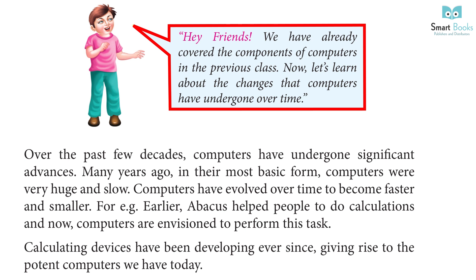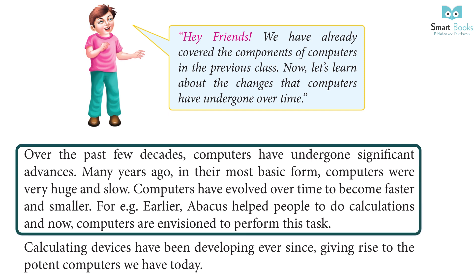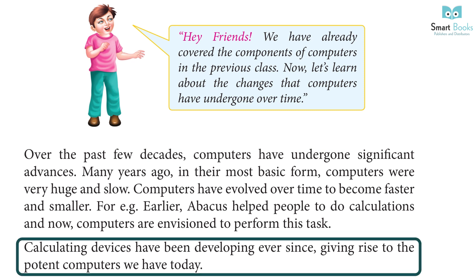We have already covered the components of a computer in the previous class. Now let's learn about the changes that computers have undergone over time. Over the past few decades, computers have undergone significant advances. Many years ago, in their most basic form, computers were very huge and slow. Computers have evolved over time to become faster and smaller. Earlier, the abacus helped people do calculations, and now computers are envisioned to perform this task. Calculating devices have been developing ever since, giving rise to the powerful computers we have today.